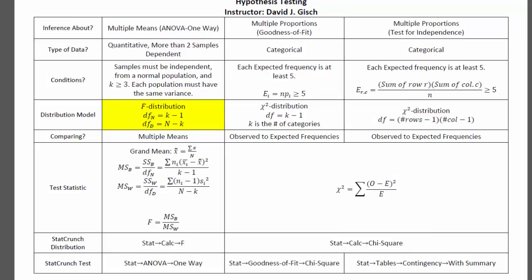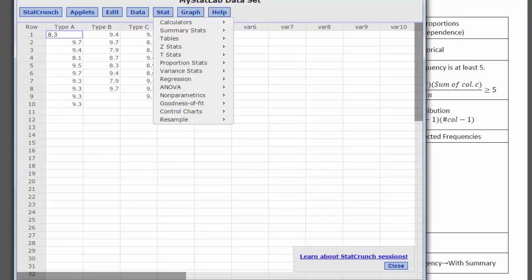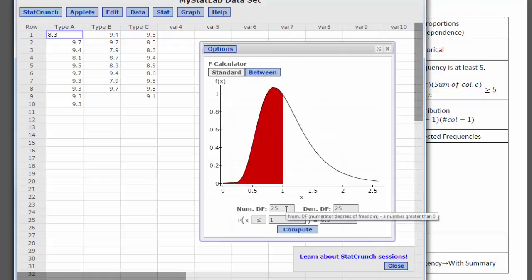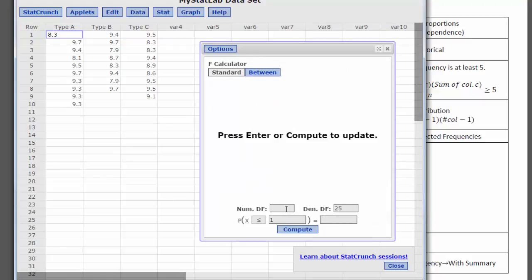Degrees of freedom of the numerator is k minus 1. Little k is the number of categories, so 3. 3 minus 1 is 2. Degrees of freedom of the denominator, that's capital N minus k. Capital N is the total of all the data together. And so we're going to go with calculators, F, numerator, that's 2, k minus 1.